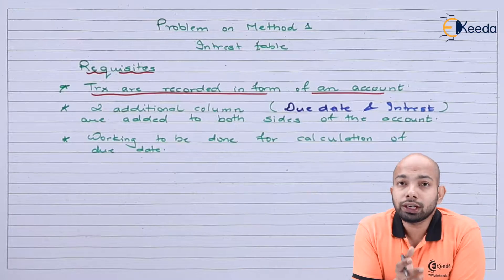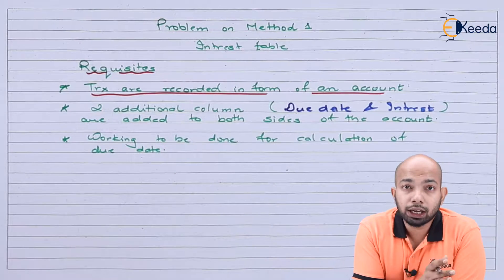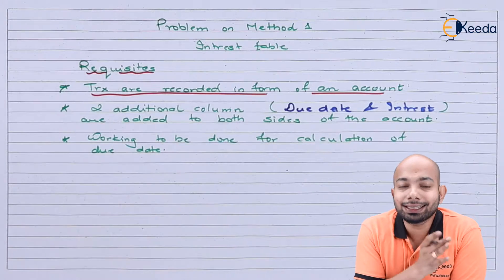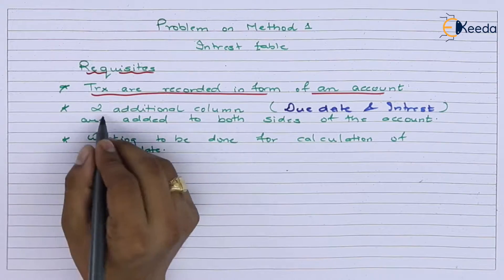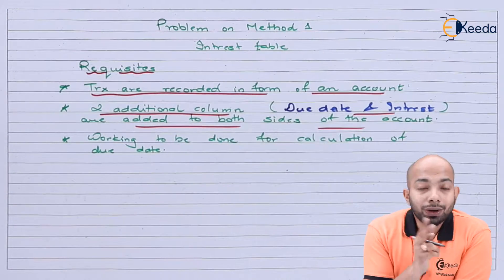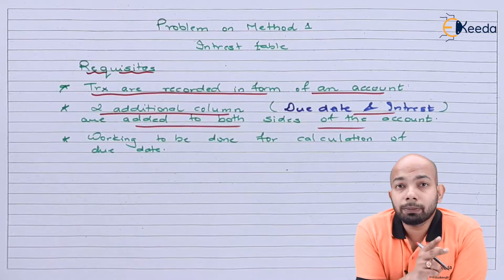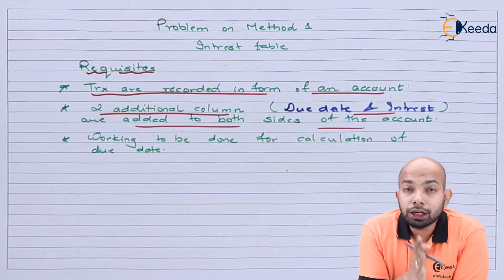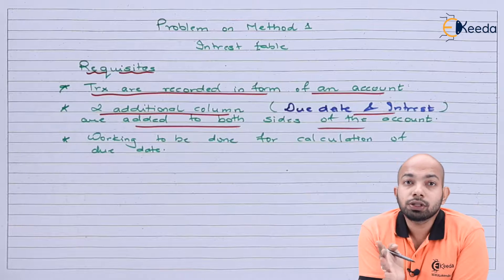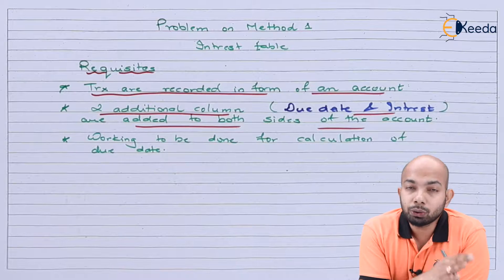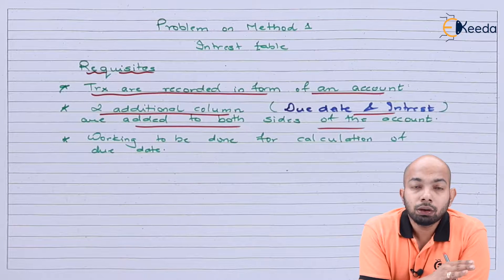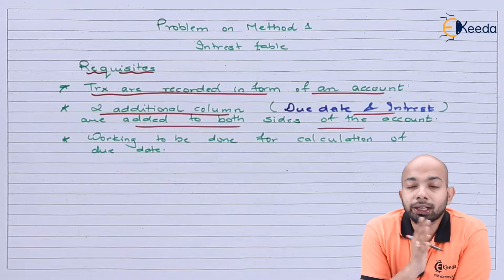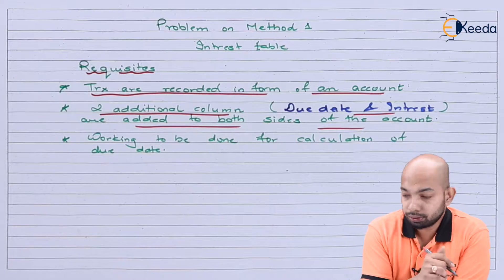The transactions are recorded in the form of an account, like debit side and credit side. Two additional columns are mentioned on each side of the account. Similar to a ledger account, the two additional columns are: a due date column on both the debit and credit side, and an interest column on both the debit and credit side.